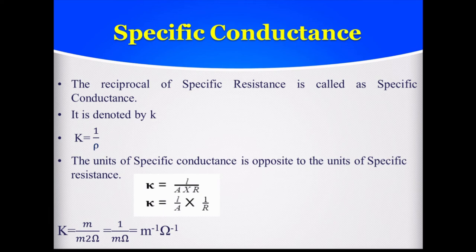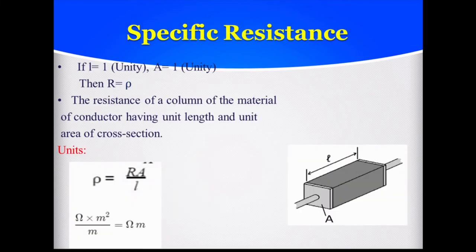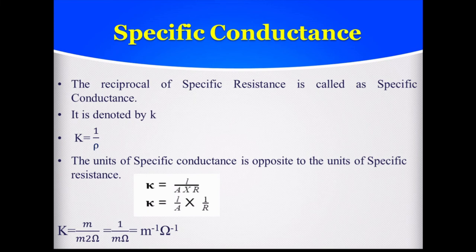Replacing length by meter, area of cross-section by meter squared, and R by Ohm: meter cancels with meter, giving 1 / (meter × Ohm), which equals meter inverse × Ohm inverse. So the unit for specific conductance is meter⁻¹ Ohm⁻¹, which is the exact opposite of the unit for specific resistance (Ohm·meter).